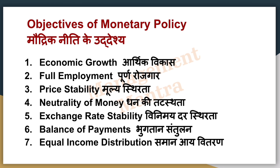चौथा है neutrality of money — money के stock में जो changes हो रहे हैं, उन्हें देखना है कि वो price, wages, exchange rate को कैसे affect करते हैं, और यह ensure करना है कि ये changes employment, GDP, और real consumption पर negative effect न करें — money की supply proper होनी चाहिए। पांचवां है exchange rate stability — currency की value fixed रखना, single currency की value को देखना, उससे benefit लेना, risk समझना, fixed rate की currency, gold या stock market में invest करने के विकल्प। इस तरह exchange rate को monetary policy के लिए use किया जाता है।